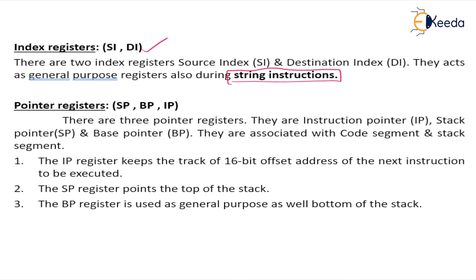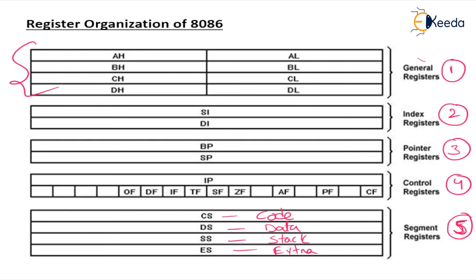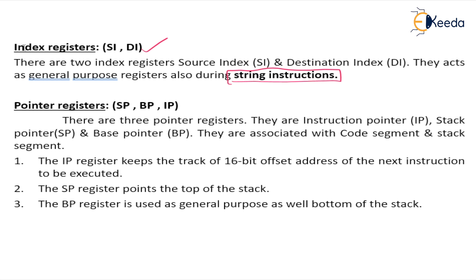Now coming to pointer registers. We have completed general-purpose registers, segment registers, and index registers. Next are pointer registers. There are three: SP and BP are in the execution unit, while IP is in the bus interface unit. IP keeps track of the 16-bit offset address of the next instruction to be executed.